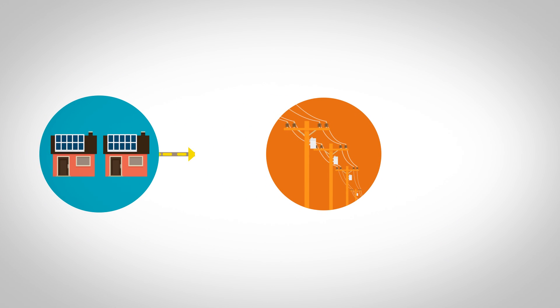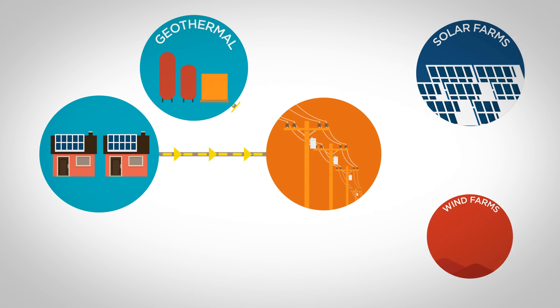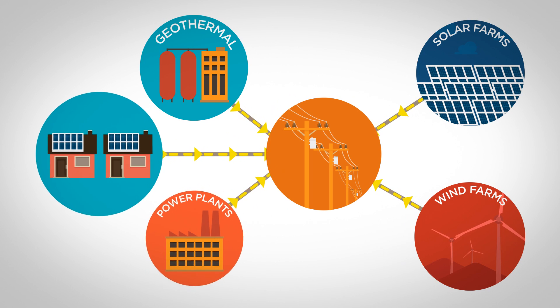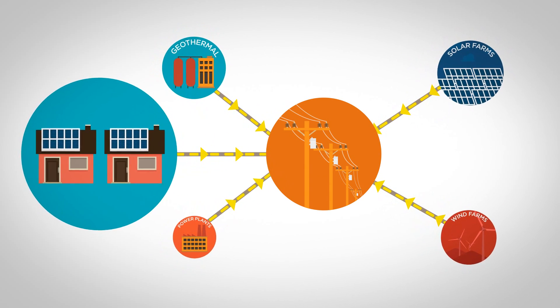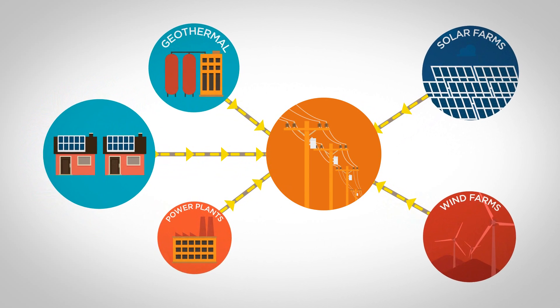As rooftop solar energy flows into the grid, other forms of energy need to be continuously adjusted. These adjustments are necessary to safely and reliably meet the demand of everyone connected to the grid.